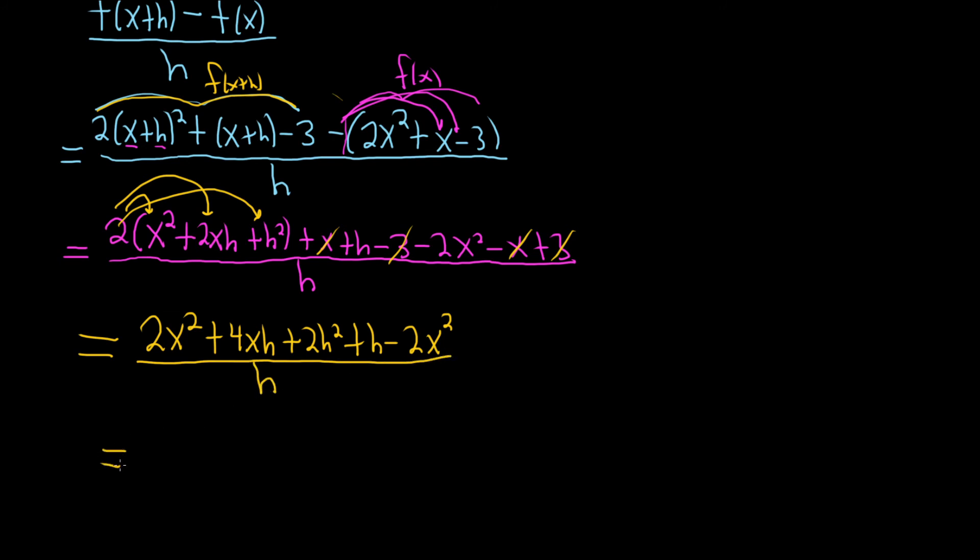So this is equal to. Oh, look, the 2x squareds cancel. So we have 4xh plus 2h squared plus h. And it's all being divided by h. We're almost there.